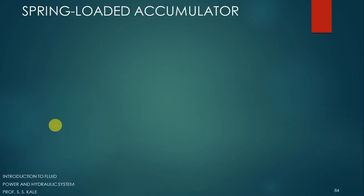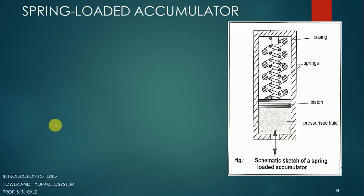The next type is the spring-loaded accumulator, where a spring is used to generate pressure. The construction is similar — there is a casing, a piston inside, and above the piston one or more springs are used (two are shown here, but there may be three or four depending on the required pressure). Below the piston there is a port for supplying and removing pressurized fluid, with a valve to control fluid flow in and out.